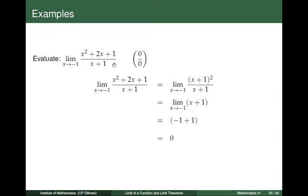First, let us look at the function given by x squared plus 2x plus 1 divided by x plus 1. Both the numerator and the denominator are polynomials, and let us obtain the limit of the numerator and the limit of the denominator as x approaches negative 1. Plugging in negative 1: negative 1 squared plus 2 times negative 1 plus 1 gives us 0, so the limit of the numerator is 0. The denominator x plus 1, when we plug in negative 1, also gives us 0. So this limit is an indeterminate form of type 0 over 0.